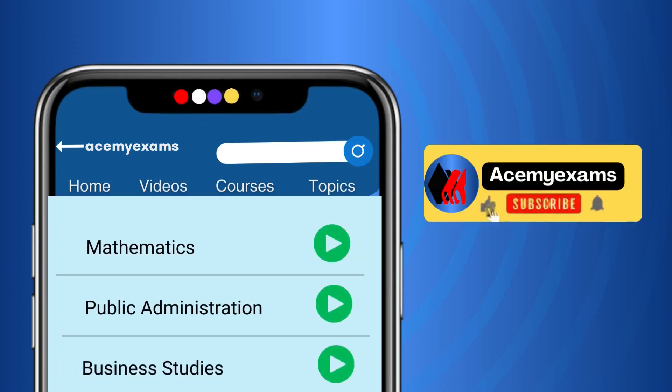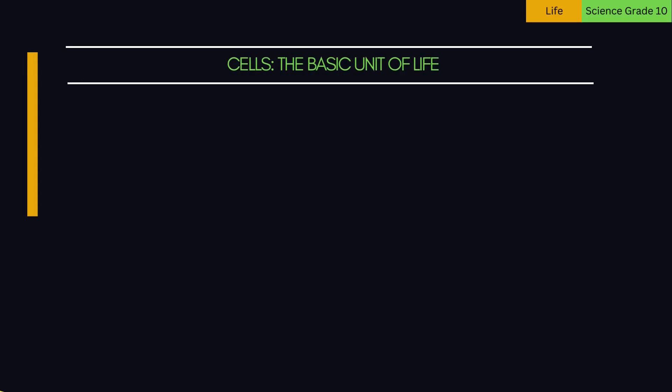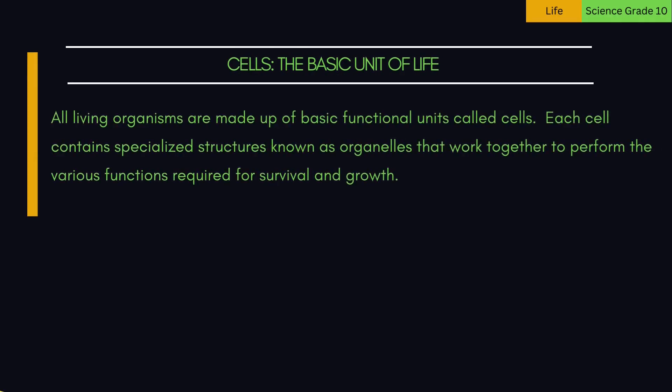Welcome to ACE My Exams Learning. Let us get started with today's learning. Cells — the basic unit of life. All living organisms are made up of basic functional units called cells. Each cell contains specialized structures known as organelles that work together to perform the various functions required for survival and growth.